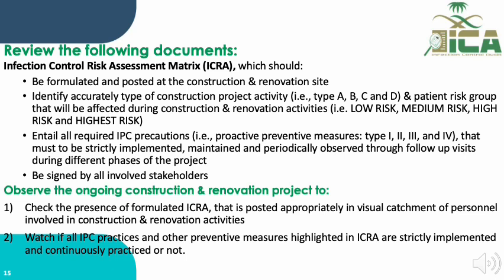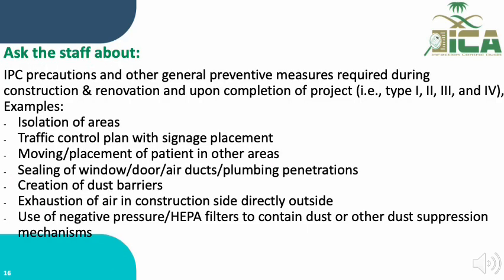For the observation activity, we check whether the formulated ICRA is posted appropriately within the visual catchment of persons involved in construction and renovation activities, and whether all IPC practices and preventive measures highlighted in the ICRA are strictly implemented and continuously practiced. For staff interview, we ask about IPC precautions and preventive measures required during construction and renovation across Types 1 through 4, including isolation areas, traffic control plans with signage, air exhaustion from the construction site directly outside, use of negative pressure or HEPA filters, and dust suppression mechanisms.